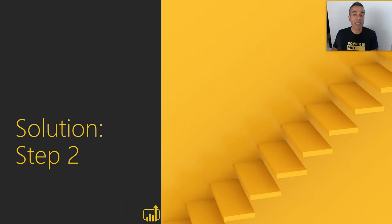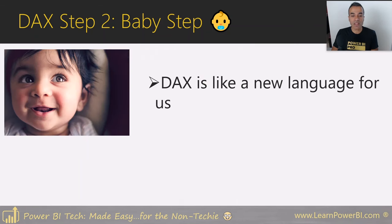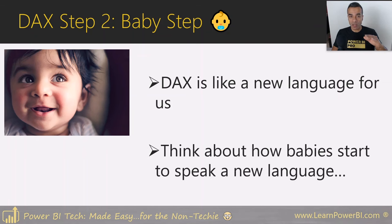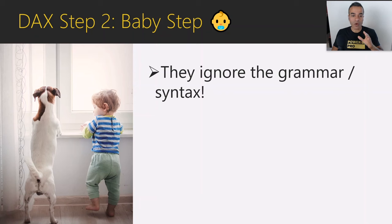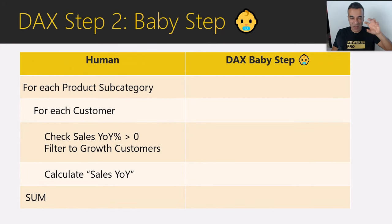Step two — you do what a baby would do. Think about how babies learn a language. DAX is like a new language for us. Babies ignore the grammar or syntax and focus on simply communicating what they want. A child might say 'me like doggy.' We're going to do something similar — focus on what we're trying to do instead of specific grammar and syntax. We're not going to worry about that yet.